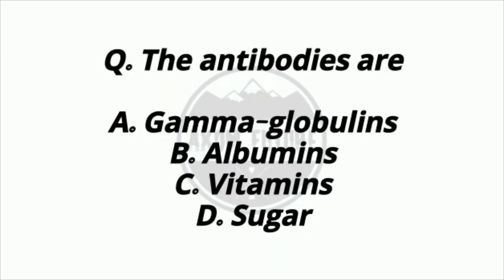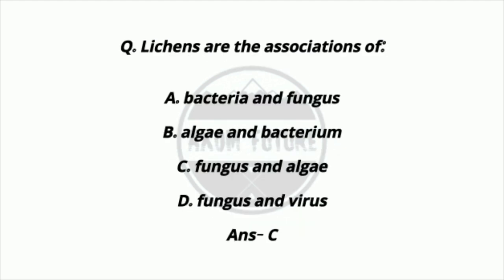Question 19: The antibodies are? The answer is option E, gamma globulins. Question 20: What is the association of lichens? The answer is option C, fungi and algae.